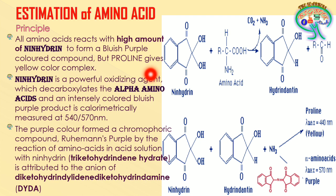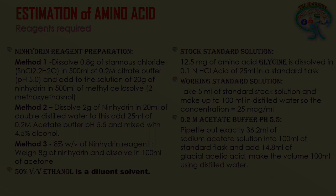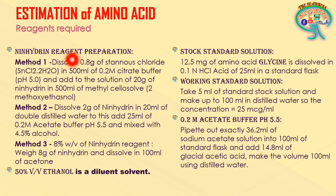That is the principle behind the ninhydrin method of amino acid estimation. The reagents required include: preparation of the ninhydrin reagent, ethanol as a diluent solvent, a stock standard solution, a working standard solution for alpha amino acid, and an acetate buffer to regulate pH for a better reaction.